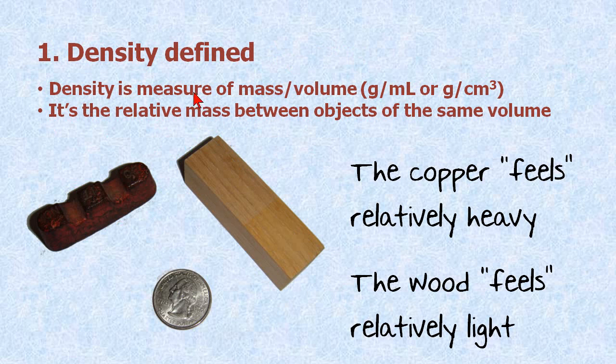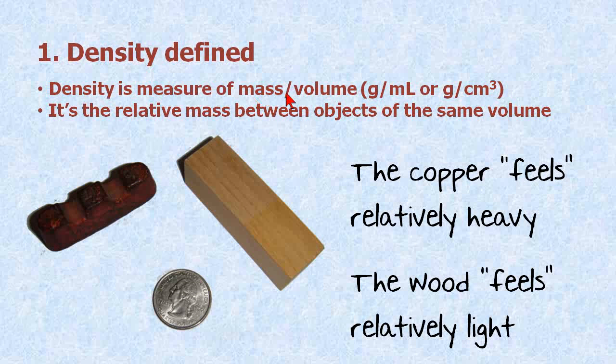Density is a measure of mass divided by volume. The units are grams divided by milliliters or grams divided by cm cubed. It's the relative mass between objects.